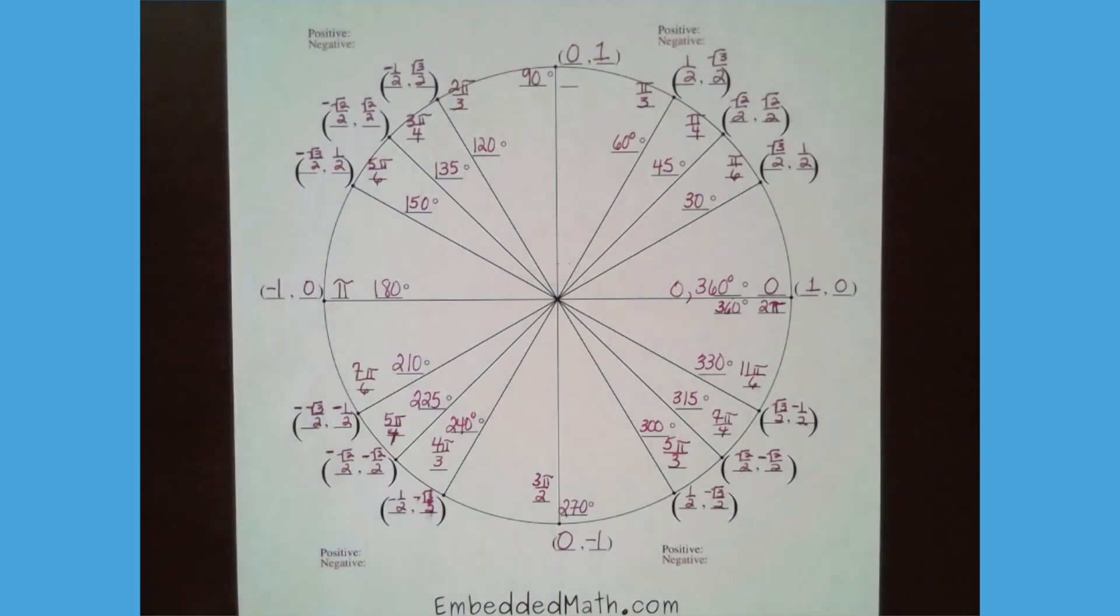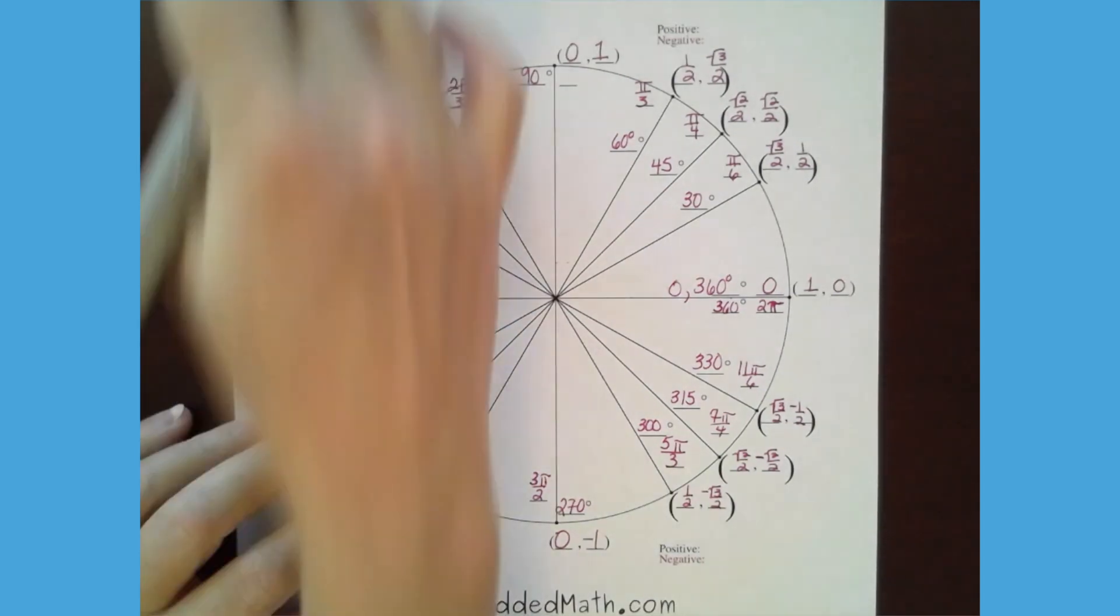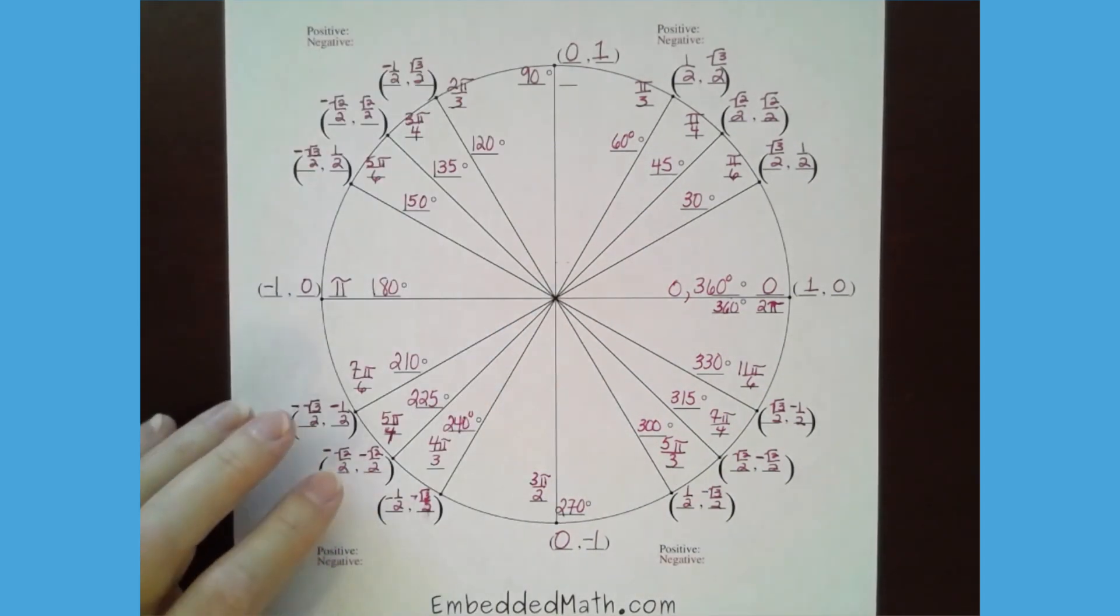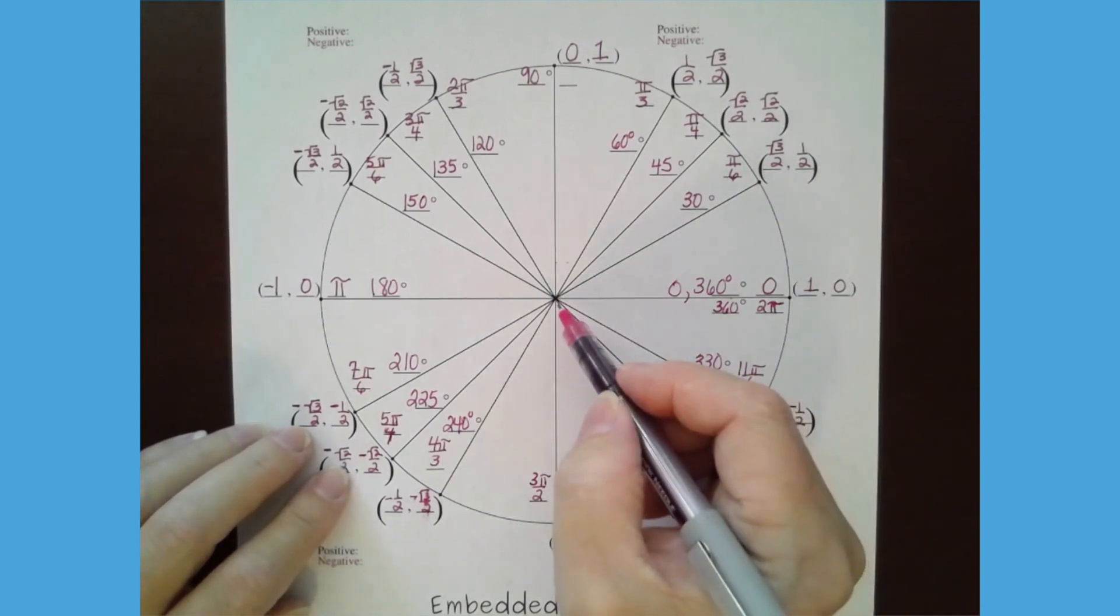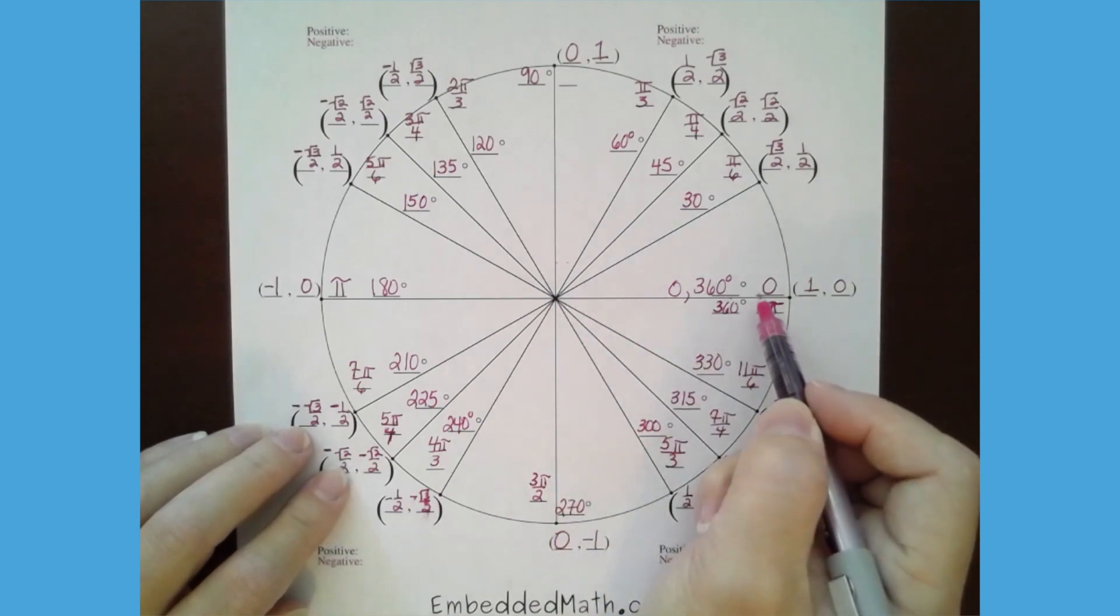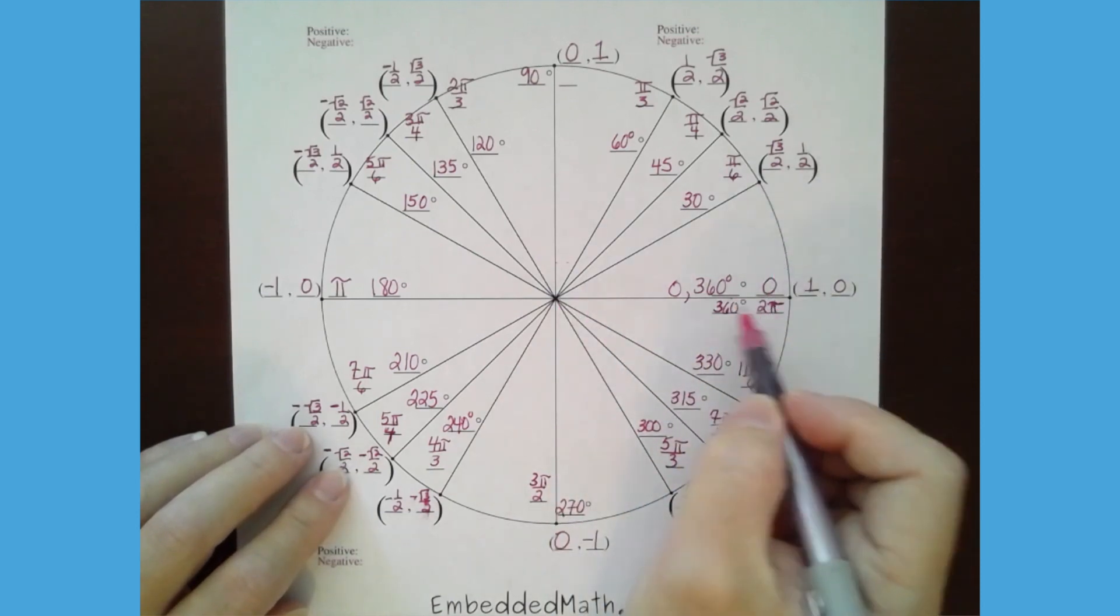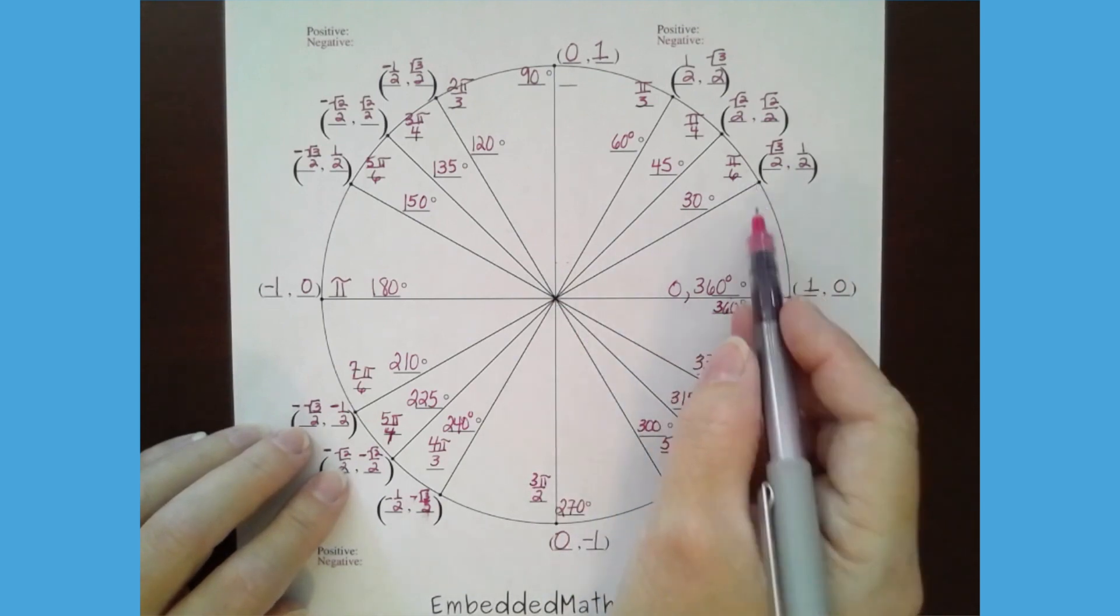So if somebody came up to me on the street, this happens all the time, and they said, hey, kitty, what is the cosine of 30 degrees or pi over 6? I would say, well, cosine is the x movement, and I go over a lot to get to that point on the circle, and over a lot is root 3 over 2. So the cosine of pi over 6 is root 3 over 2.